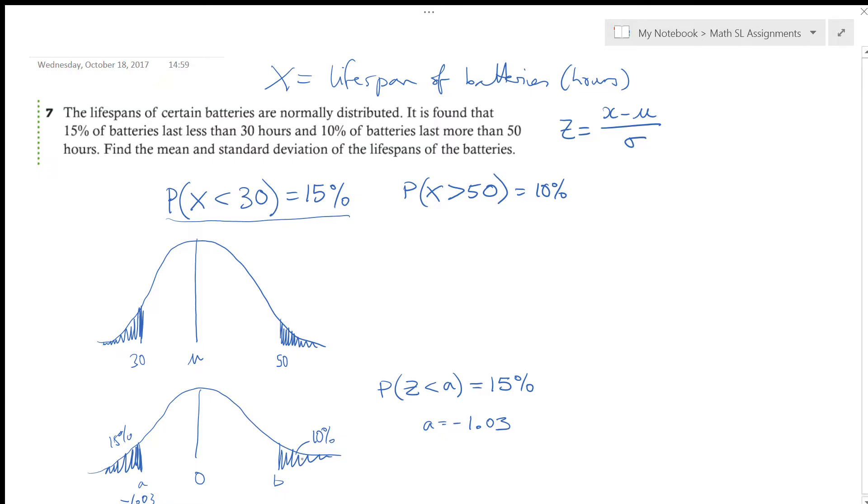Now for this one here, I have to be careful because this is 10%. Well, if this is 10%, probability that Z is greater than B is equal to 10%, then probability that Z is less than B is equal to 90%. So I'm actually going to use 90 for my area to find this value here. So 2nd vars inverse norm, 0.9, and I'm going to get 1.28. Okay, so I have my two Z values.